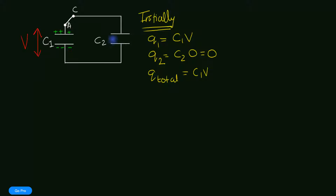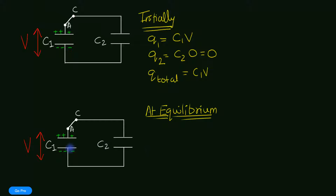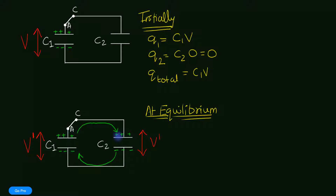Let's draw the situation at electrostatic equilibrium. This capacitor is going to start getting discharged — charges are going to start moving from here to here. I'm showing the direction of positive charges. Because of this, the voltage is going to start dropping, and eventually this capacitor also gets charged up. Finally, the voltage on both capacitors will be the same: the new voltage is going to be V dash, which is smaller than V. Our goal is to calculate what this voltage V dash is, because then we can calculate the charges on each capacitor.